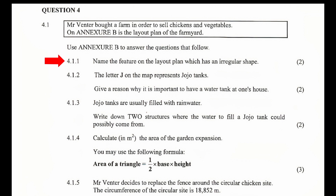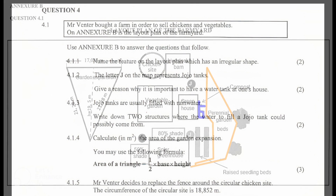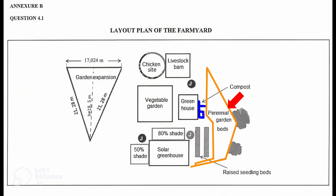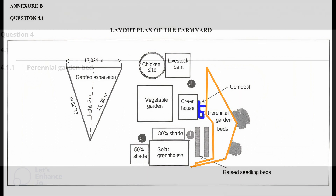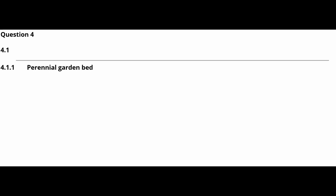4.1.1 — Name the feature on the layout plan which has an irregular shape. From the layout plan in Annexure B, the feature with an irregular shape is the perennial garden bed. Another acceptable answer would be the compost.